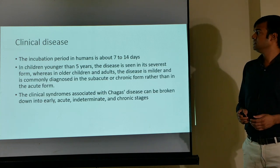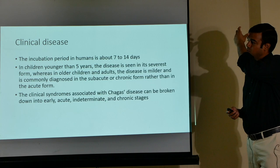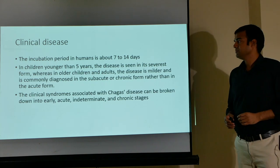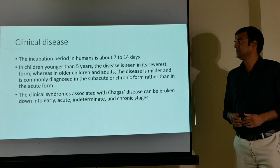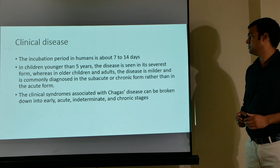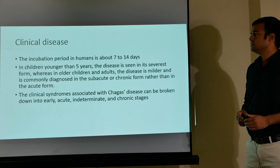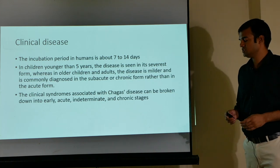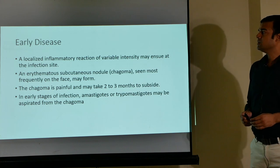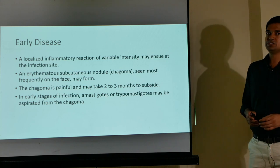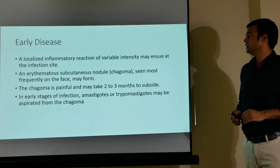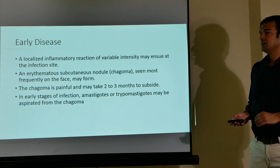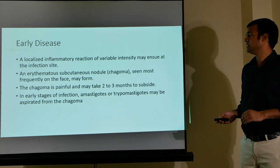The incubation period in humans is about 7 to 14 days. In children younger than 5 years the disease is in its severest form, whereas in older children and adults it is milder and commonly diagnosed in subacute or chronic form. Chagas disease clinical syndrome is broken into early, acute, intermediate, and chronic stages. In early disease, a localized inflammatory reaction called a chagoma — an erythematous nodule — is seen most frequently on the face, is painful, and may take 2 to 3 months to subside. Amastigotes or tripomastigotes may be aspirated from the chagoma.